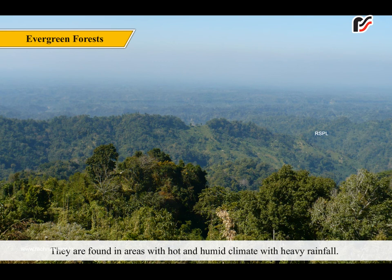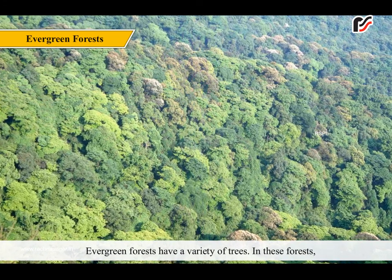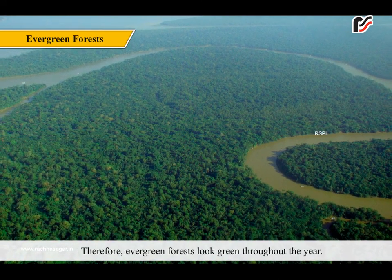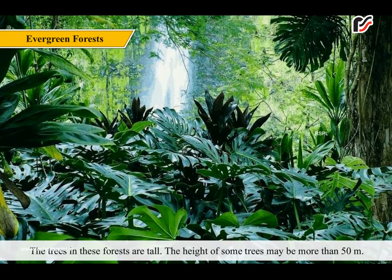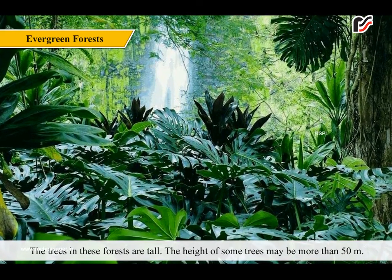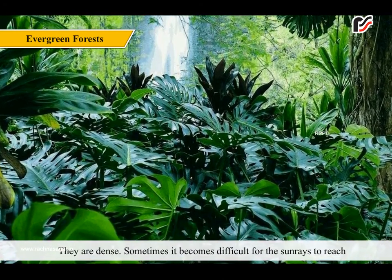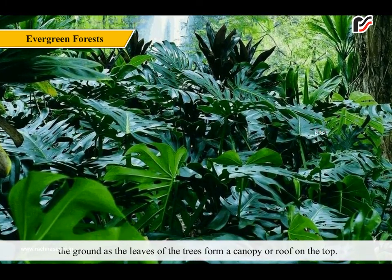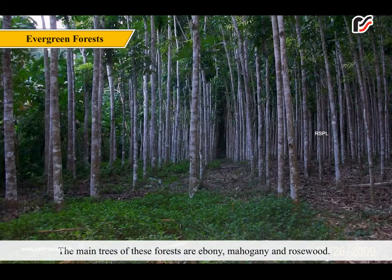Evergreen forests are also known as tropical rain forests. They are found in areas with hot and humid climate and heavy rainfall. Evergreen forests have a variety of trees where different trees shed their leaves in different seasons, so they look green throughout the year. The trees are tall — some may be more than 50 meters. They are dense, and sometimes sunlight cannot reach the ground as the leaves form a canopy on top. The main trees are ebony, mahogany and rosewood.